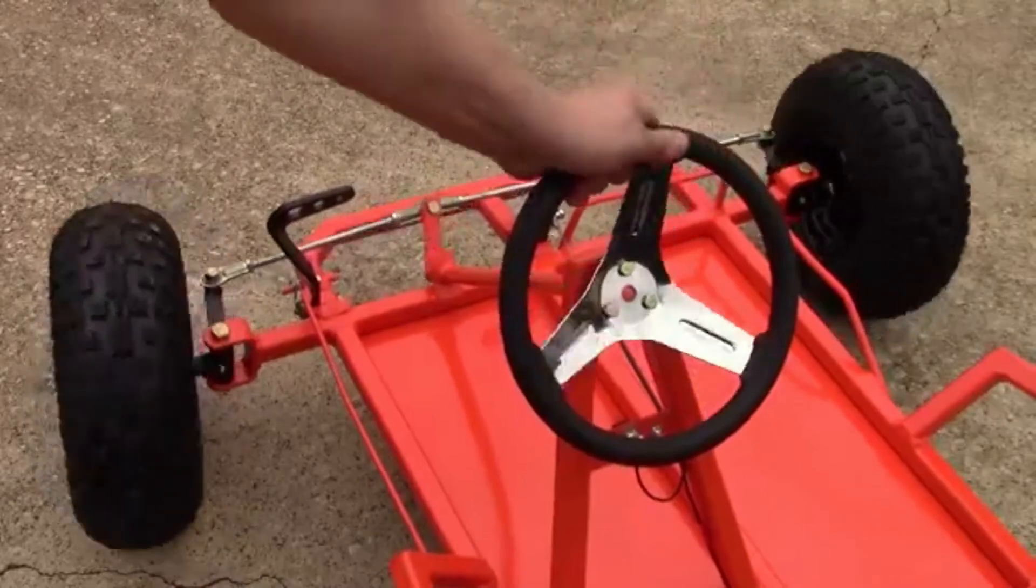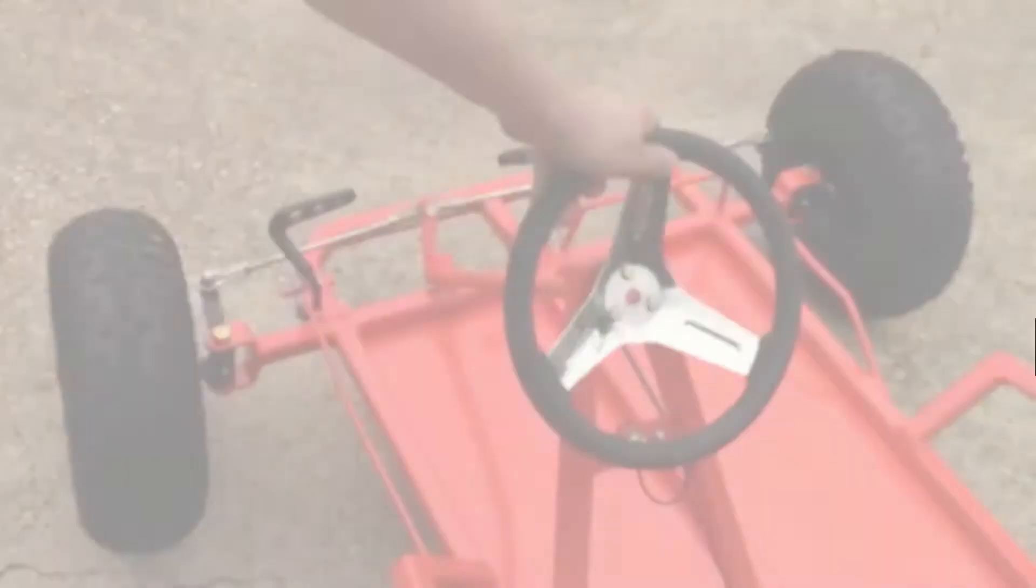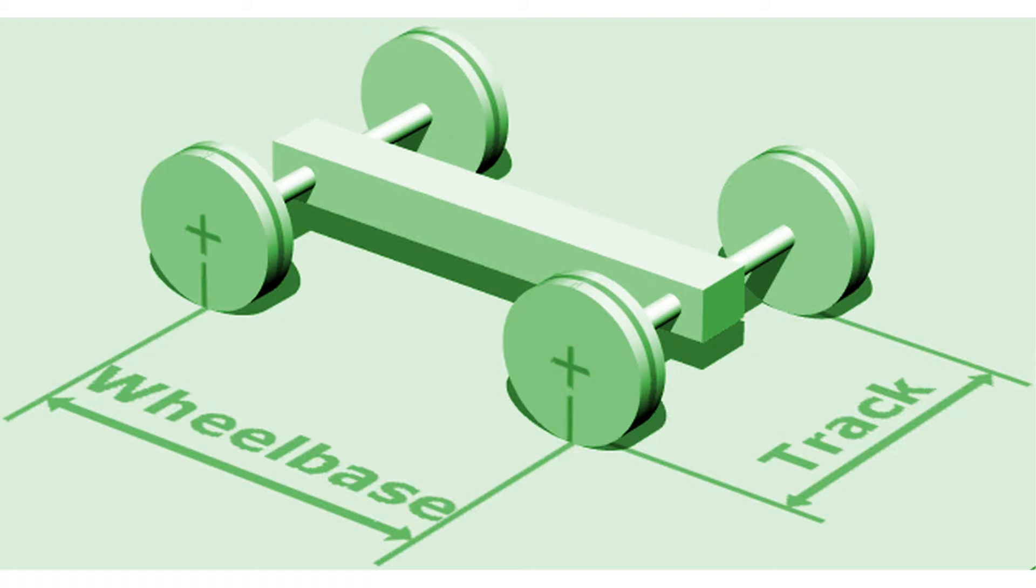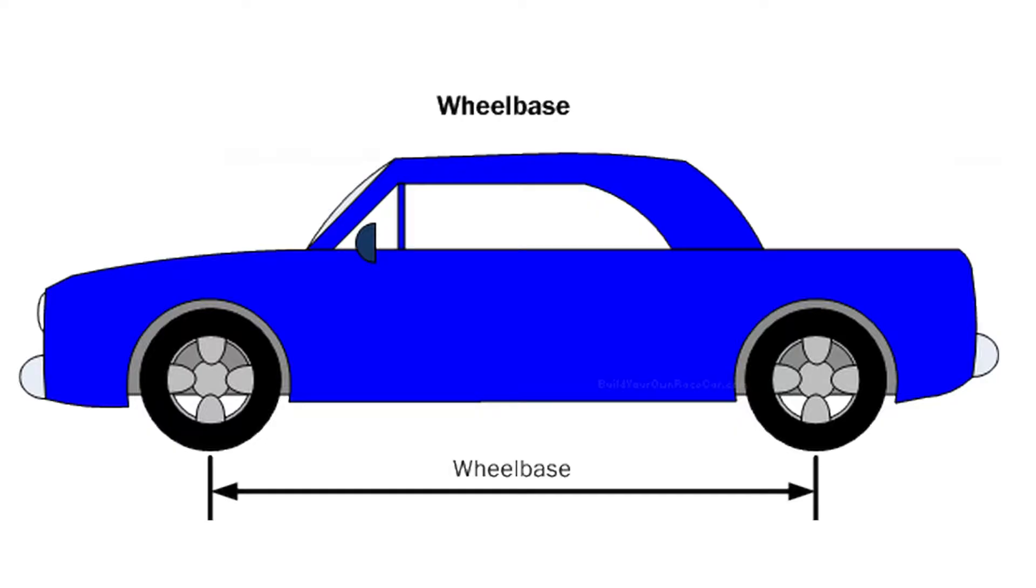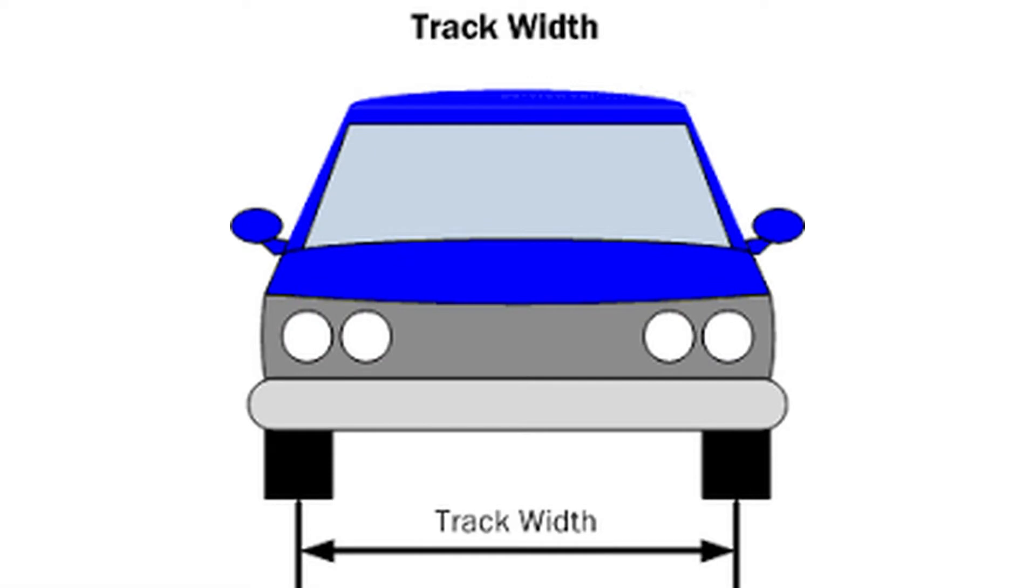Let's talk about the design flow. It starts with track width and wheelbase selection. Wheelbase is the distance between front and rear axles of the vehicle, whereas track width is the center-to-center distance between the wheels.